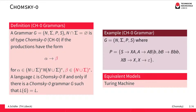If you feel like it, you can try to figure out what this grammar actually does. We call a language Chomsky zero if there is a grammar that generates this language. It turns out that this definition is actually equivalent to the definition of the Turing-acceptable languages. So the equivalent machine model here is the Turing machine — for every Chomsky zero grammar we can construct a Turing machine that accepts the same language, and vice versa.